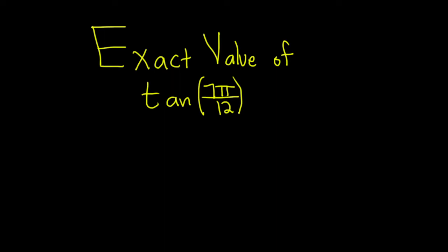Hello, in this problem we are going to find the exact value of the tangent of 7π over 12. To do that we want to use an identity, and so we're going to write 7π over 12 as a sum of two other angles for which we know the trig function values of those angles.